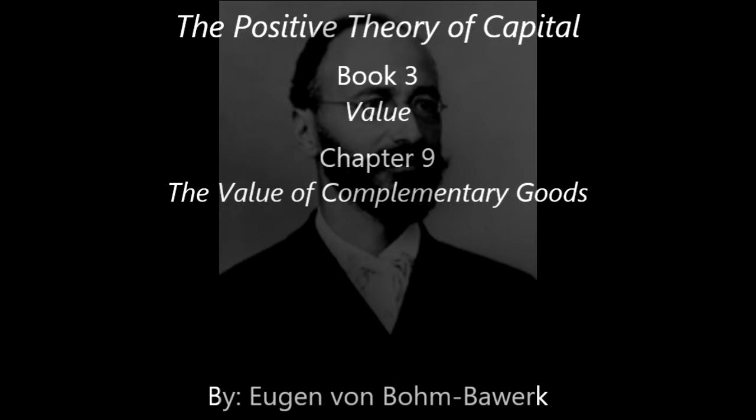to the amount of the marginal utility which it is capable of affording as a group. If, for instance, three groups A, B, and C form a complementary group, and if the smallest utility economically obtainable by the joint deployment of these three goods amounts to a value of a hundred, the three goods A, B, and C taken together will be worth a hundred.